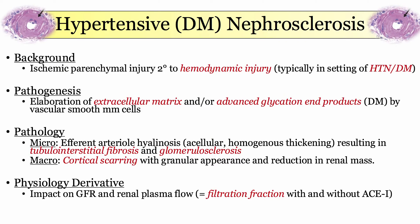To summarize nephrosclerosis: hemodynamic injury leads to deposition of extracellular matrix, with or without advanced glycated end products in a diabetic. Arteriolar hyalinosis results in chronic ischemic injury to the kidney, characterized by tubular atrophy, scarring of the glomeruli and interstitium, and a reduction in renal mass. The key physiologic derivatives relate to increased resistance of the efferent arteriole, the filtration fraction, and how this is impacted by ACE inhibitors.